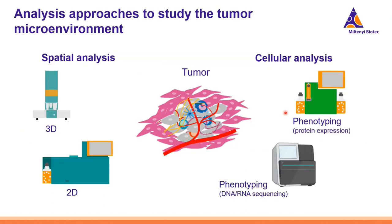In the previous webinars, we have seen already different approaches on how we can study the tumor microenvironment. On one hand, we can analyze the tumor from the spatial context, either using 3D or 2D microscopy technologies, but we can also analyze the different cell types that form the tumor by using flow cytometry or sequencing.